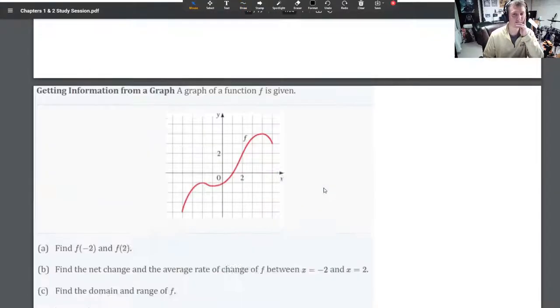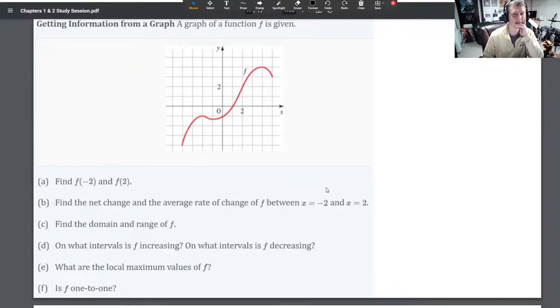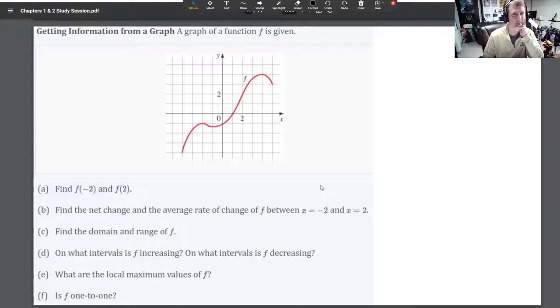I don't want to actually write it out because it takes too much time. Okay. Here, this is a good one. But do we need to do it? So if I gave you a graph of a function like this, could you tell me function values, find net change, domains, where is it increasing or decreasing, local maximum values, is it one-to-one? Can you do these questions? Yes, you can do them. Okay, so we'll skip it then.